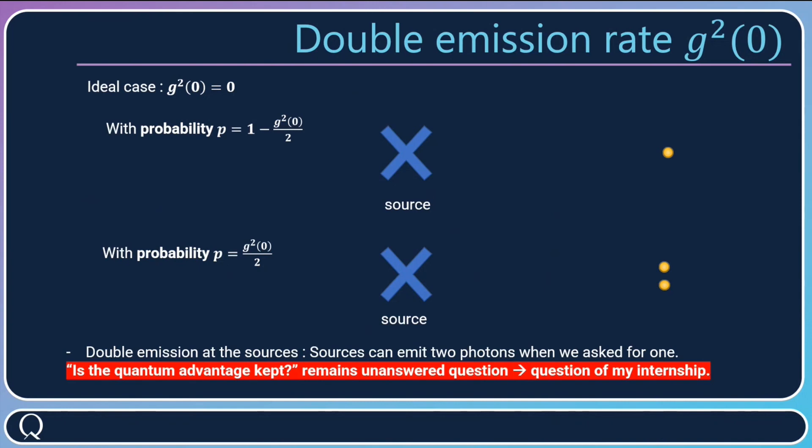So this is double emission at the sources. What happens to our experiment? Do we still have an experiment that can't be reproduced by a classical computer in an efficient way? That is the question that remains unanswered, and it is the question of my internship. Thank you. This was my presentation, and if you have any questions, feel free to direct them to me.